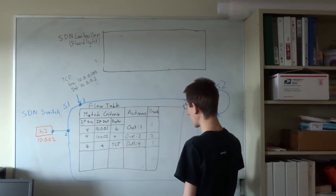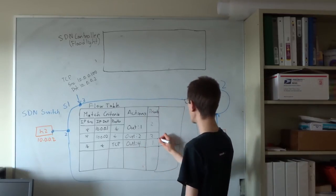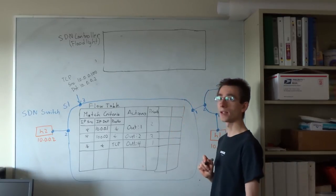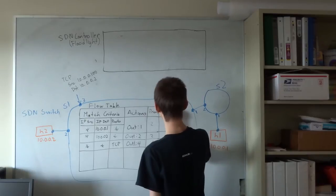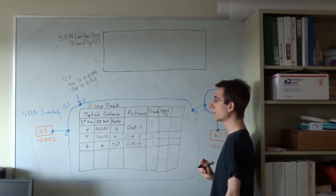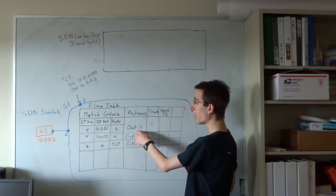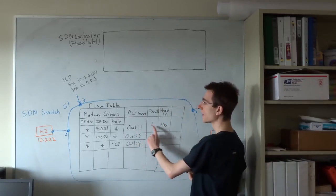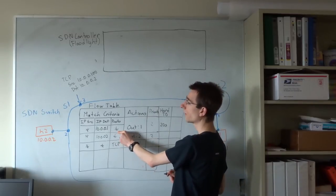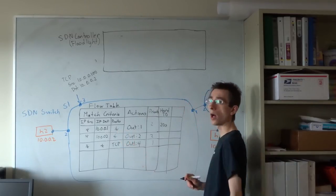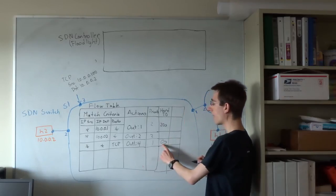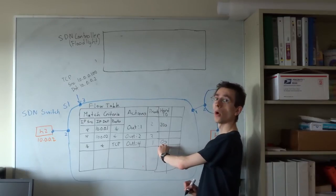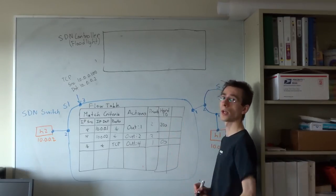There are two additional fields applied to every entry in our flow table, associated with timing out or having the switch automatically remove rules. The hard timeout field determines after what time after the switch rule was installed should the rule be removed. If we put in a hard timeout of 20 seconds, that means 20 seconds after this rule was installed by the SDN controller, the switch will automatically remove this rule. If we put a hard timeout of 0 seconds, it means this rule will never automatically be removed by the switch — it will only be removed if the controller explicitly requests it.